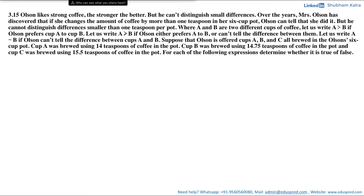Where A and B are two different cups of coffee. We write A is strictly preferred to B if Olson prefers cup A to cup B. We write A is weakly preferred to B if Olson either prefers A to B or cannot tell the difference between them. We write A is indifferent to B if Olson cannot tell the difference between cups A and B.